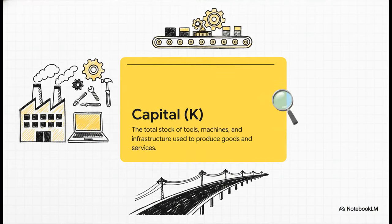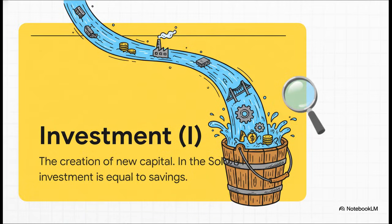First up is capital — you'll often see it as the letter K. Just think of this as all the physical stuff an economy uses to make other stuff: the factories, the computers, the roads, the whole shebang. It's the engine of the economy. So how do we get more capital? Through investment. This is the force that builds the engine up, adding new equipment and infrastructure every year. A good way to picture it is like pouring water into a bucket.